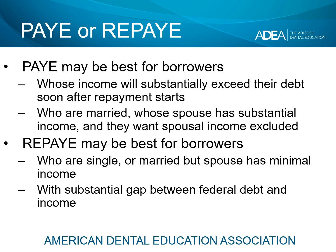With Pays As You Earn, a married borrower can file a separate return and spousal income will not be counted in the determination of the monthly payment amount. We think REPAY may be best for borrowers who are single — the spousal income consideration is irrelevant at that point — or those who are married but whose spouse has minimal income, so the inclusion of spousal income has minimal impact on the monthly payment with REPAY. We also think REPAY may be best for borrowers who have a substantial gap between their federal debt and income, because these borrowers should benefit from the 50% subsidy available with REPAY.